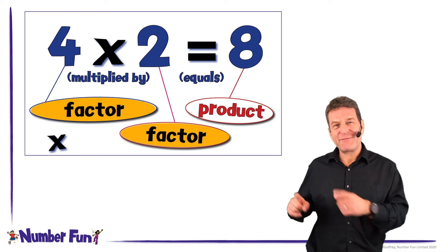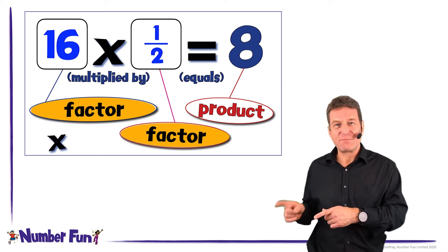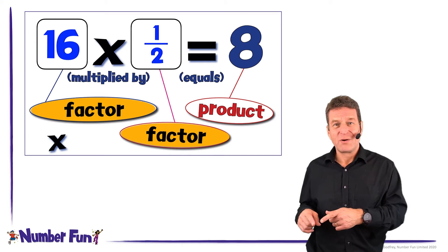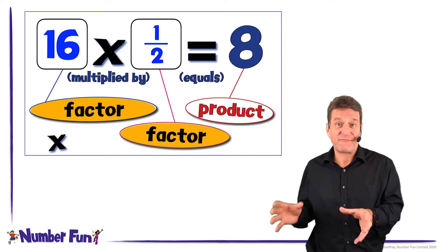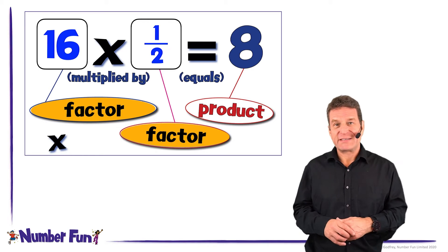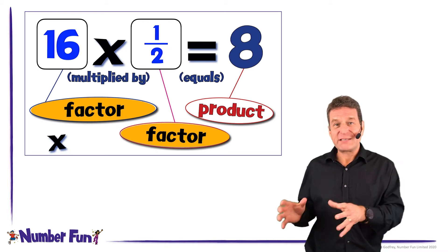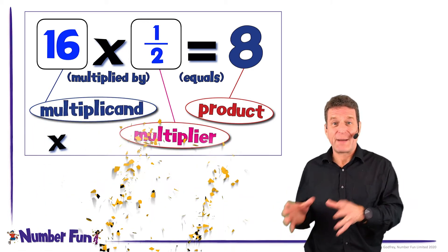The trouble is if we have this calculation, 16 multiplied by a half, well neither 16 or a half are factors of 8. So therefore the better vocabulary is multiplicand and multiplier.